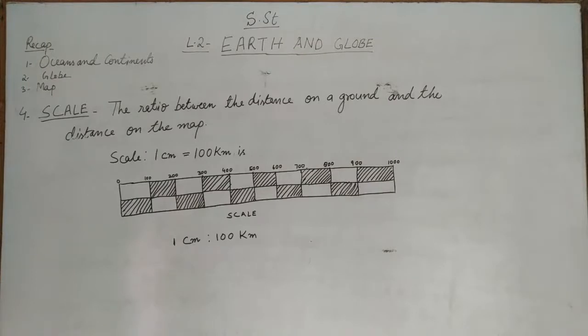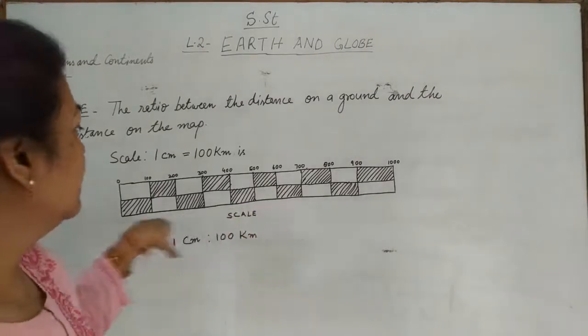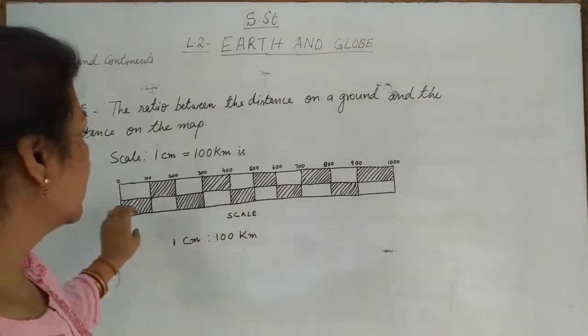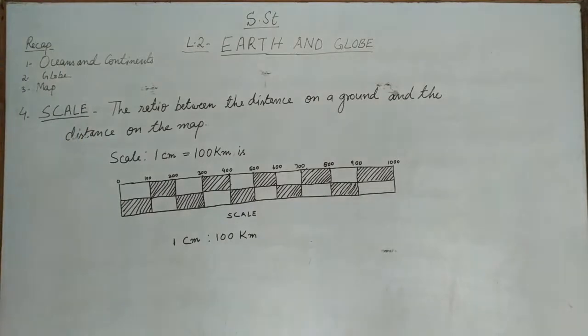It can be called as linear scale or graphical scale. We can call it linear scale or graphical scale, which is in the form of bars. As you can see here, this is the scale used in maps. These are in form of bars.